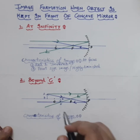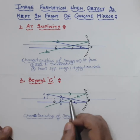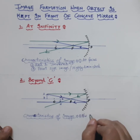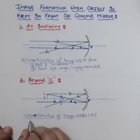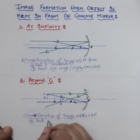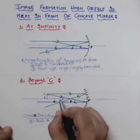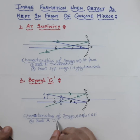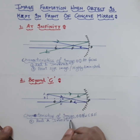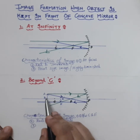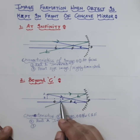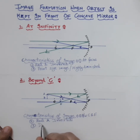Label the object AB and the image A'B'. The image is formed between center of curvature and focus. It is real and inverted, formed by real intersection of the rays. Comparing sizes, the image is smaller than the object, so the image is diminished.